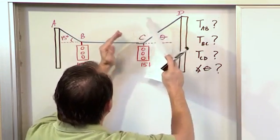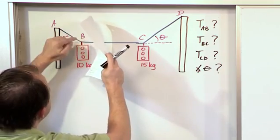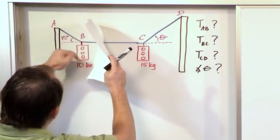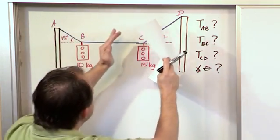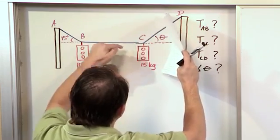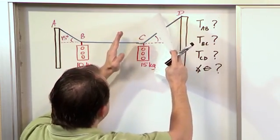But what I like to do is focus on this as its own little system and then separately focus on this as its own little system. Because if you zoom in on this, you see there's a tension, tension, and a weight and an angle. And then if you focus on this, there's tension, tension, tension, and an angle, all right?